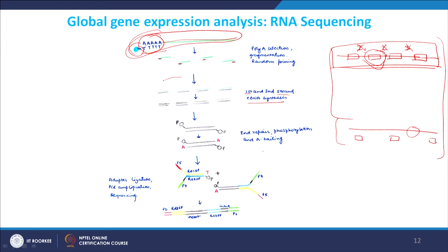Essentially you are generating different small double-stranded cDNA fragments. One important step is end repair — adding phosphate groups because normally primers do not have phosphate at their end, and without phosphate they cannot form a phosphodiester bond for ligation. Then you can add a flanking A-tail using poly-A polymerase. Adding this A-tail allows you to take this fragment and add adapters — the adapter has a stretch of T, so T and A anneal to each other and you can perform a ligation reaction.